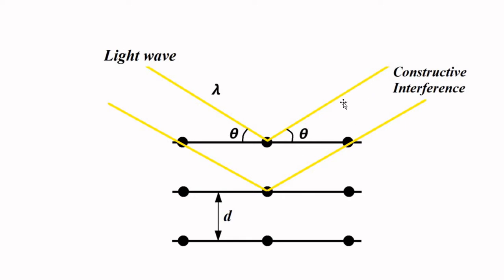Here, the angle of scattering or the angle of diffraction is equal to the angle of incidence. This happens only when the wavelength of the light wave is similar to the interatomic distance.